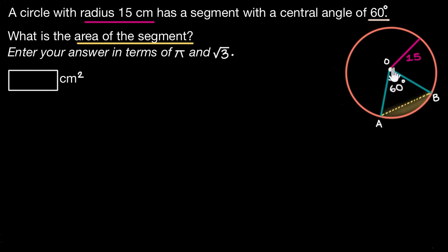So this is a segment and this segment makes an angle of 60 degrees at the center. So the central angle made by this segment is 60 degrees and we need to figure out the area of this segment, this shaded region. Now how do we go about it?